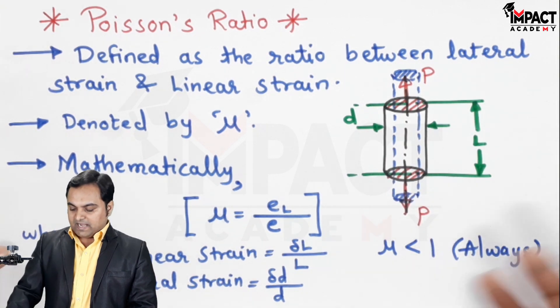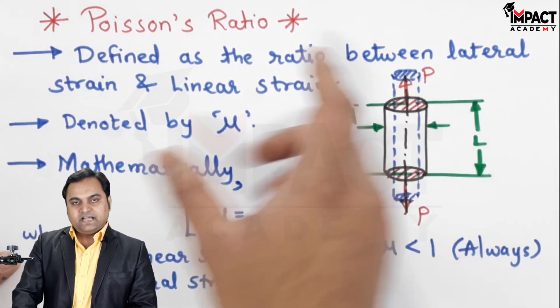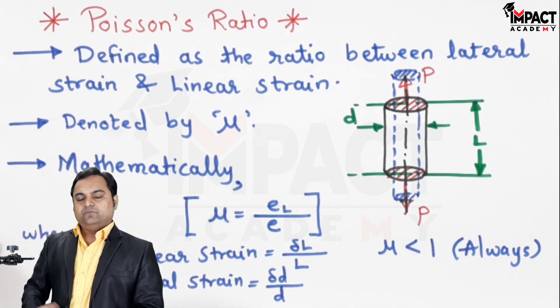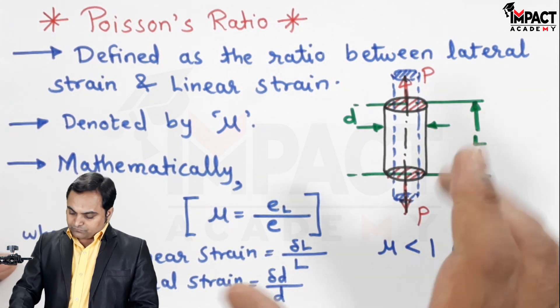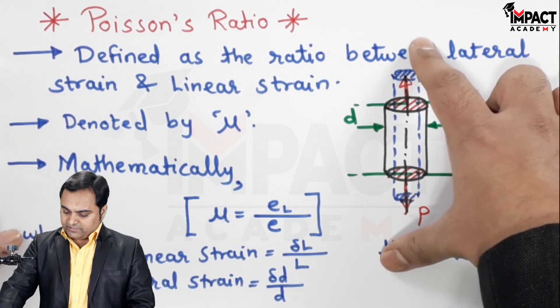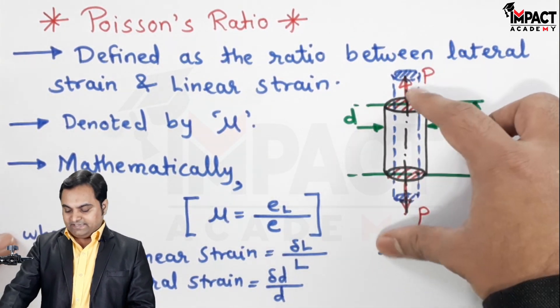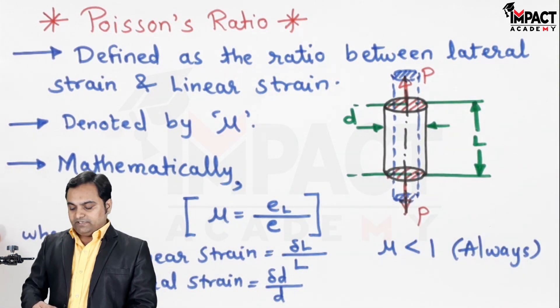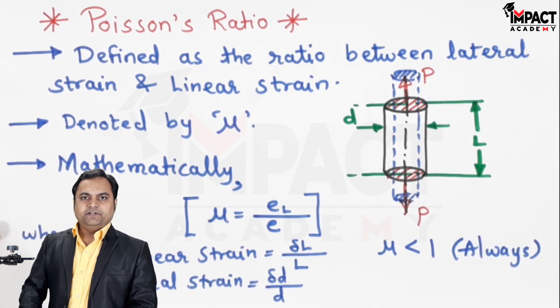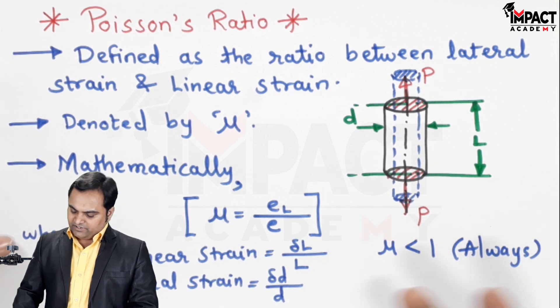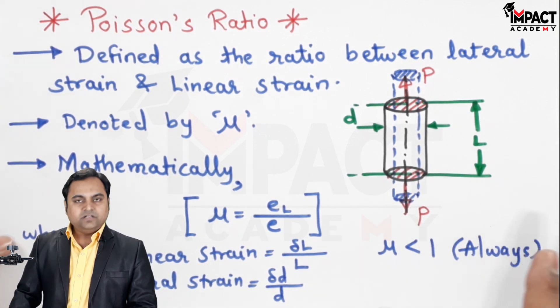When it is compressed there would be increase in diameter and decrease in length. So the increase in diameter would be treated as the effect due to lateral strain, whereas the decrease in length would be treated as the linear strain.